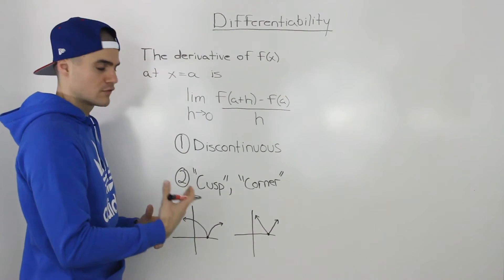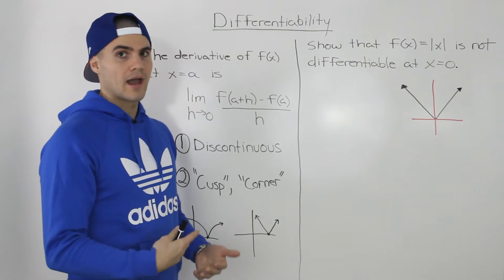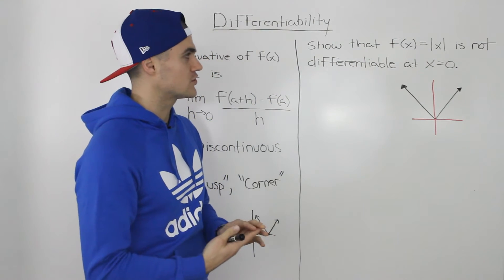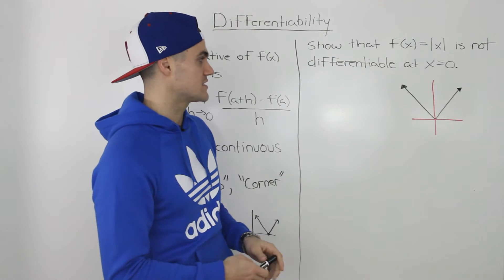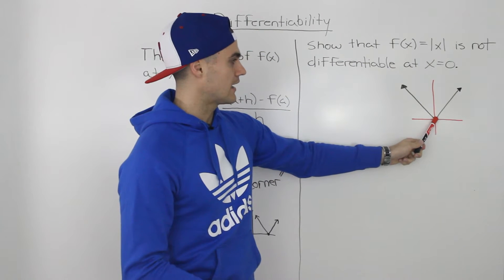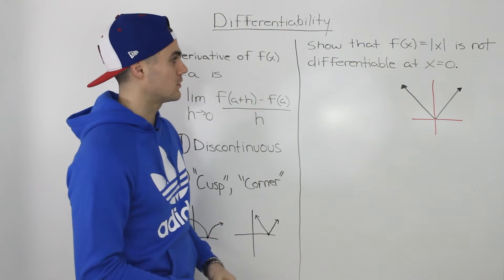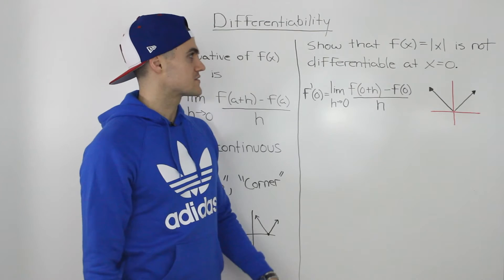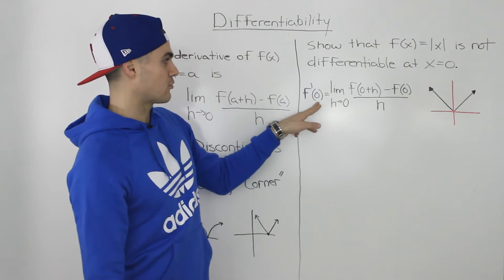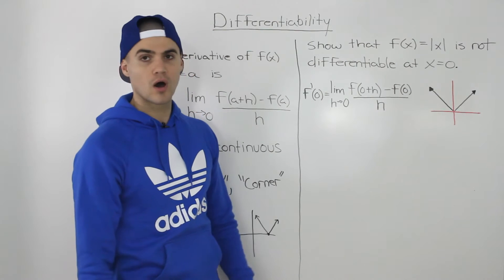We're going to deal with the case of a function not being differentiable at a cusp or corner, and we're going to prove it. We'll show that the absolute value of x is not differentiable at x = 0, because at that x value the absolute value function is at a corner. To prove it, we find f'(0), which equals the limit as h goes to 0 of f(0+h) minus f(0) all over h.